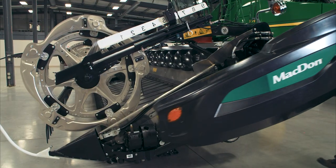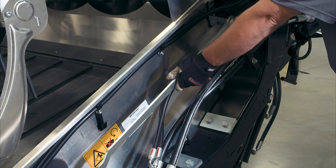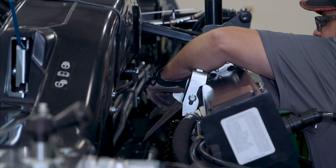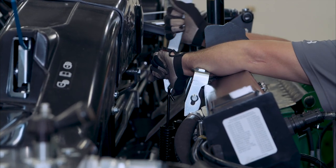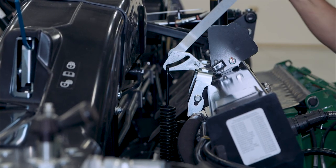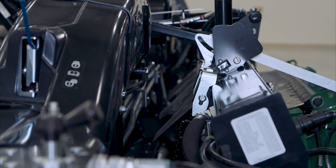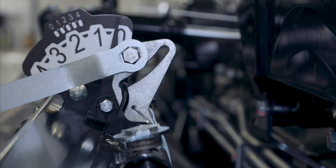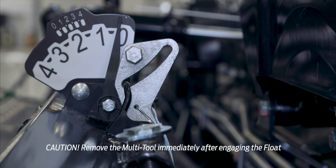Locate and remove the set it right multi-tool from the left end shield. Place the multi-tool on the float setting lever. The tool should be slightly angled towards the front of the header. Pull down on the tool towards the back of the header until the lever is over center and will not return to its original position. Remove the tool and repeat on the opposite side.